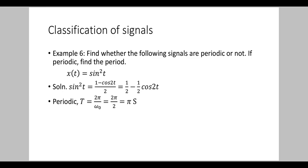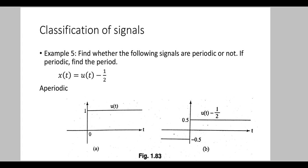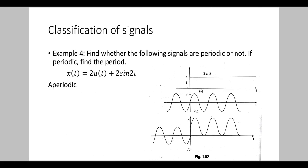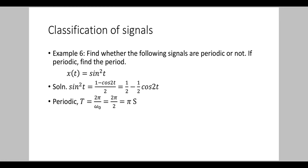The constant 1/2 that is added does not change the period, similar to how adding a step signal to a sinusoid affected the previous example. The period of sin²(t) is π seconds. Let's continue with the next class. Thank you.